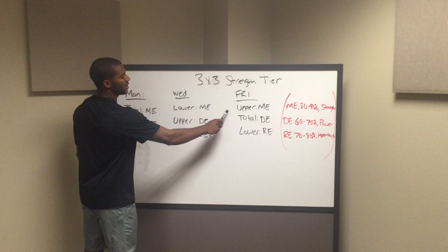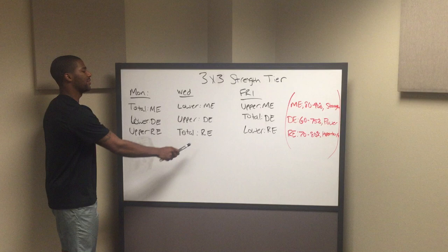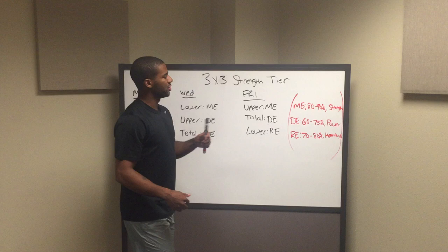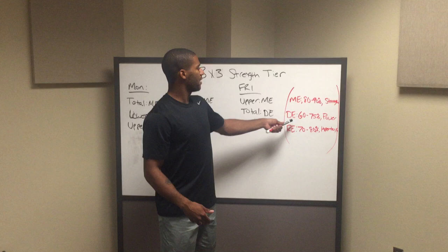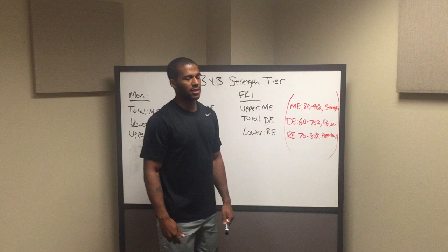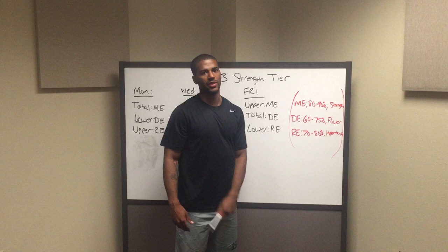If you do not know what that means, referring to Prilepin's chart: max effort is 80 to 90% of your one rep max, dynamic effort is 60 to 75% of your one rep max, and repeat effort is 70 to 80% of your one rep max. Or you can think of it as strength, power, and hypertrophy, as we talked about in undulated periodization. That's basically how you set up a three-by-three tier — if you want to add a five-day, you'll add two more tiers to each.